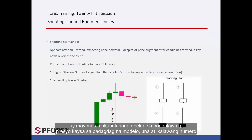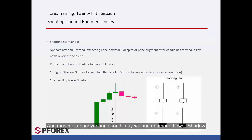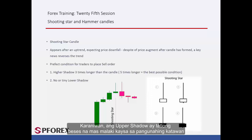The decreasing model has more considerable effect rather than the increasing model. The more powerful candle does not have any lower shadow. Normally, the upper shadow is three times longer than the main body.